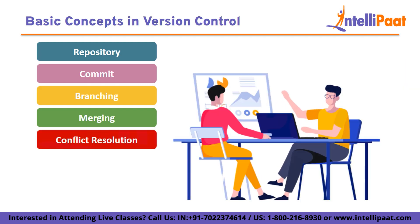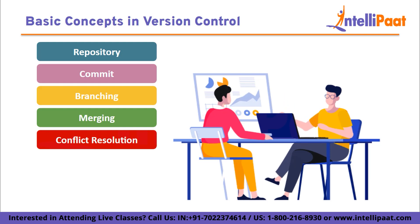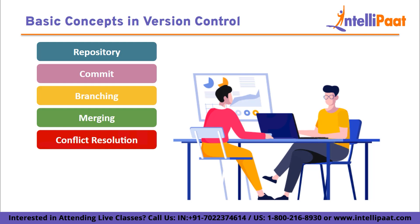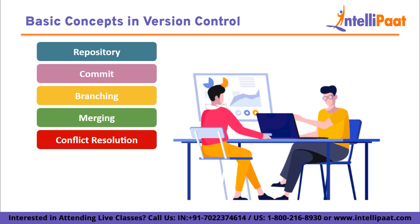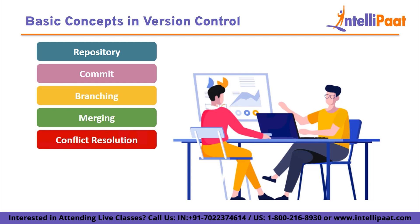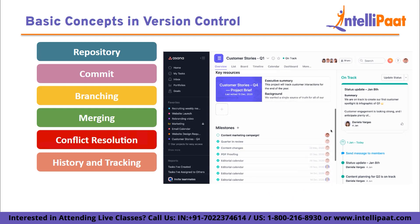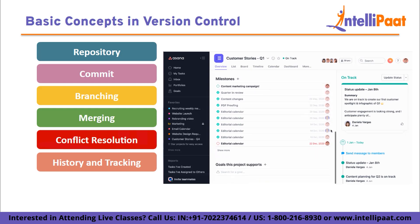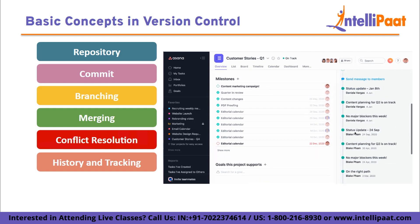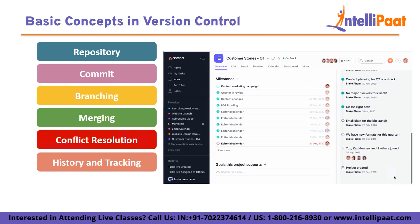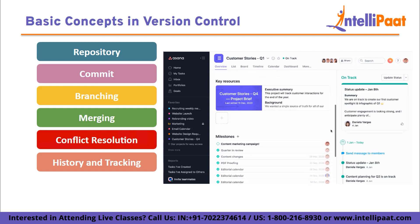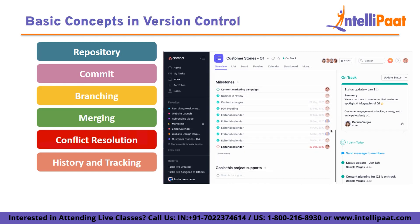Conflict resolution: Conflict resolution occurs when multiple changes conflict with each other, such as two developers modifying the same line of code. Version control systems provide mechanisms to identify and resolve conflicts during the merging process. History and tracking: Version control systems maintain a detailed history of all changes made to the project, allowing you to track the evolution of files, review previous versions, and understand who made changes and when.